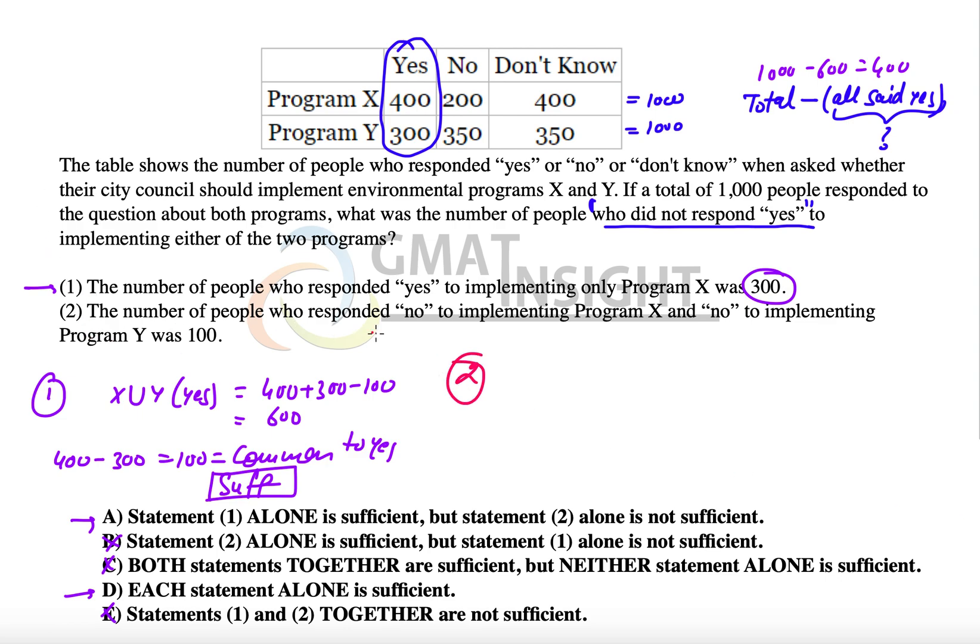Now let's look at the second statement. The second statement says the number of people who responded no to implementing program X and no to implementing program Y was 100. That tells us the union of no, but we do not know any information about don't know. Therefore, the second statement is clearly not sufficient to answer the question, and the final answer to this question will be option A.